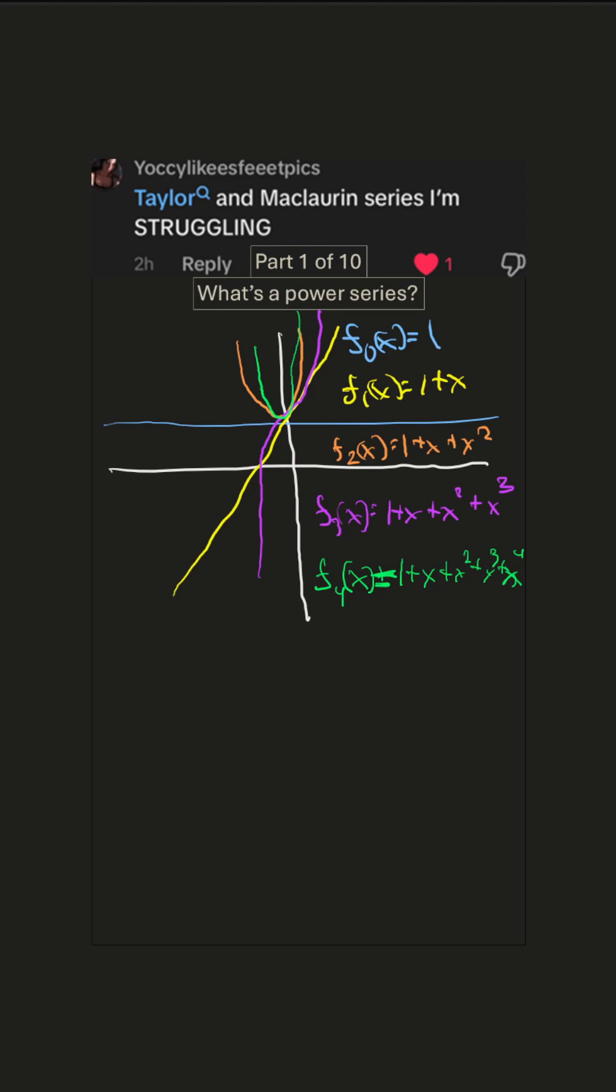And those are just approximations. But what we're doing is we're adding more details with each term. And the purpose of that is that we're using this polynomial. And polynomials are simpler than other functions. Other functions can be hard to work with and hard to integrate and so on.